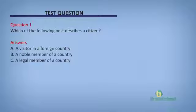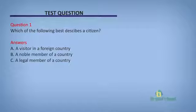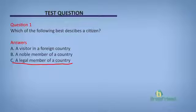First question: which of the following best describes a citizen? Option A, a visitor in a country. B, a noble member of a country. And C, a legal member of a country. Pick your answer. Did you say C? Yes, that's right. The correct answer is C, a legal member of a country. We said a citizen is a legal member of a country who has full constitutional rights and responsibilities.